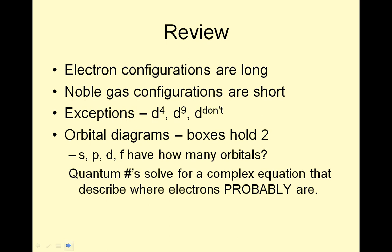Review slide. Electron configurations are long, noble gas configurations are short. D4, D9 don't exist. Orbital diagrams - boxes hold 2. S, P, D, F have how many orbitals? 1, 3, 5, 7. Quantum numbers solve for a complex equation that describes where electrons probably are, and they're not in this anymore, so I will say to you: toodles.